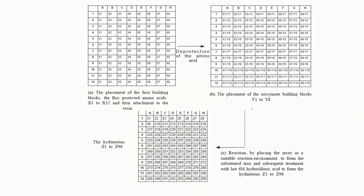Welcome back to this course on Organic Chemistry in Biology and Drug Development. In the last session, we were discussing combinatorial chemistry — a technology developed to produce a large library of compounds and then test it through high-throughput screening. The whole exercise is done to have quick access to the hit compound, so that the hit compound can then lead to lead optimization.